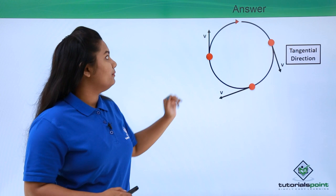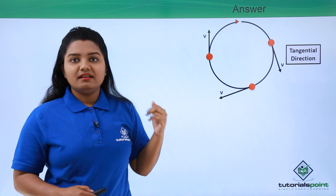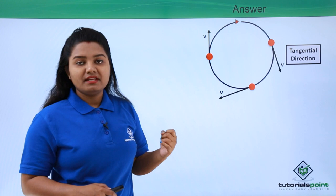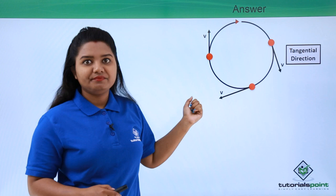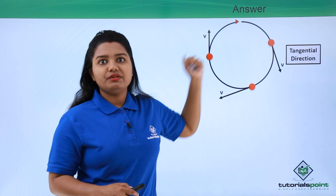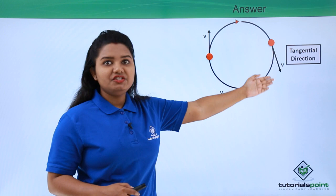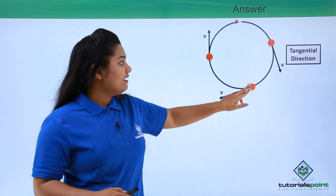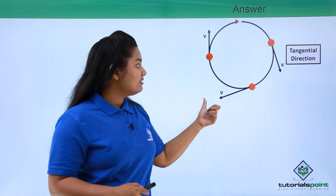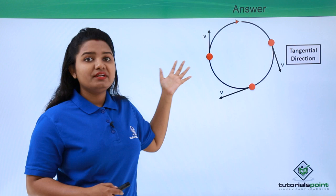Whenever the stone is moving in this circular path tied to a string, if the string breaks, the stone will continue to move in the direction it was moving at that instant of time. So if the stone is at a certain position when the string breaks, it will move along the tangential direction at that point. Similarly, at any other position on the circle where the string breaks, the stone will continue to move along that respective tangential direction.